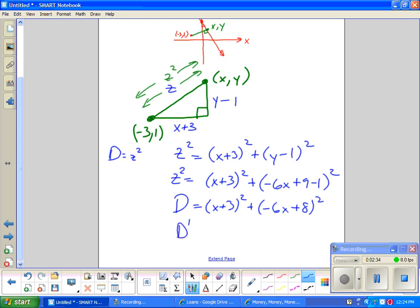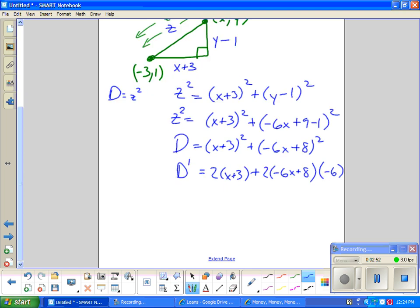So I get D prime, the derivative of the distance squared, is equal to 2 times x plus 3 times 1, plus 2 times negative 6x plus 8 times negative 6, the derivative of the inside. And this is a way easier equation to deal with now for simplification. And we know we want to optimize, so D prime has to be 0.